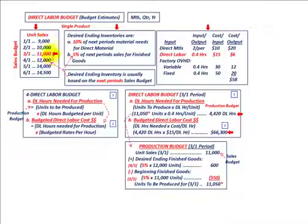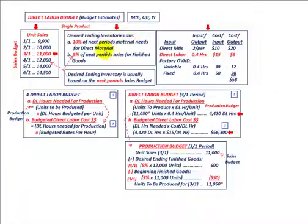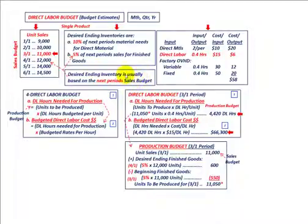Based on our sales budget for March, we're going to be selling 11,000 units. Looking at the next month, April, the sales department budgeted 12,000 units. We then need to determine our desired ending inventories — specifically finished goods inventory. In this example, ending inventory is based on 5% of the next period's sales budget.